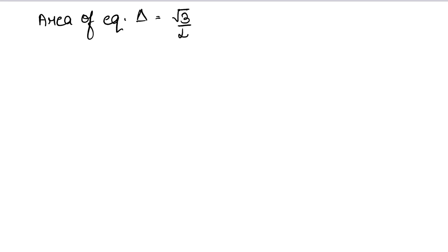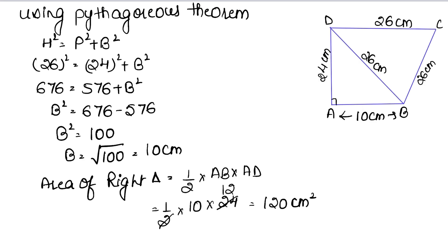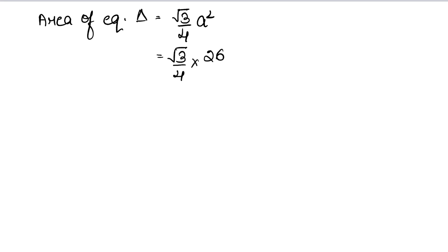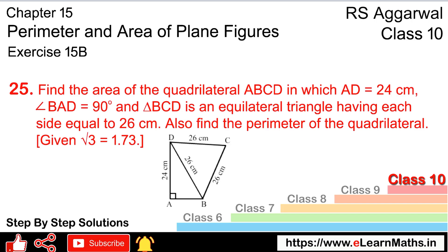Now we find the area of the equilateral triangle BCD. The formula for the area of an equilateral triangle is root 3 upon 4 into a squared, where a is the side length. The side of the equilateral triangle BCD is 26 cm, so we have root 3 upon 4 into 26 squared.